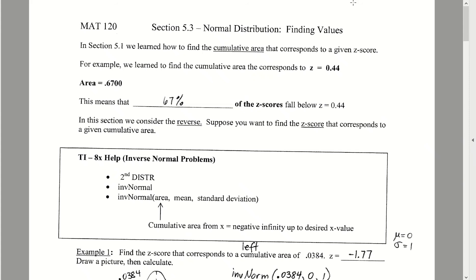In section 5.3 we're going to work on the inverse problem, which is finding values where we know the cumulative area or the probability. In the past, if we were given z equals 0.44, we could find the cumulative area — the area to the left — using the normal CDF, which would give us 0.6700, meaning 67% of z scores fall below z equals 0.44.